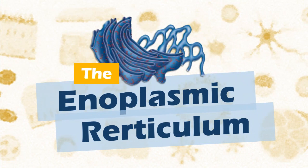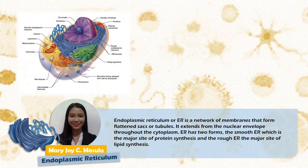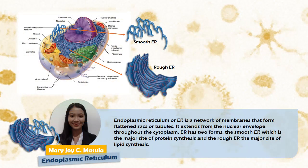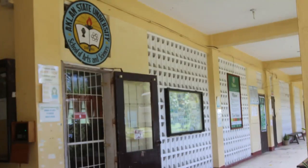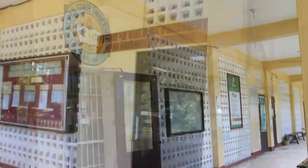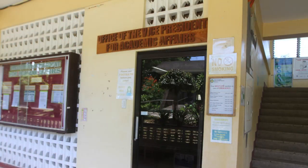Endoplasmic Reticulum. The endoplasmic reticulum, or ER, is a network of membranes that form flattened sacs or tubules. It extends from the nuclear envelope throughout the cytoplasm. The ER has two forms: the smooth ER, which is the major site of protein synthesis, and the rough ER, the major site of lipid synthesis. In our analogy, the endoplasmic reticulum is like our university offices, which are responsible for receiving, handling, and disseminating information — just like the ER, which produces biomolecules for the rest of the organelles and transports them from one to another, enabling the cells to function.